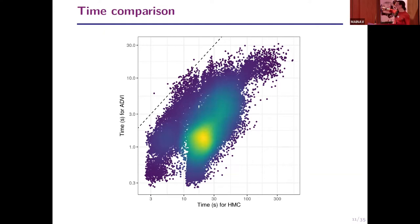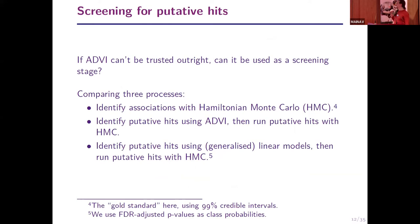It's worth noting that the computational time for ADVI is generally lower than for the equivalent Hamiltonian Monte Carlo model. If we can't trust ADVI estimates outright, can we use it as a screening approach? We compared three approaches: HMC alone; putative hits identified via ADVI then rerun with HMC; and putative hits identified via a generalized linear model then rerun with HMC.